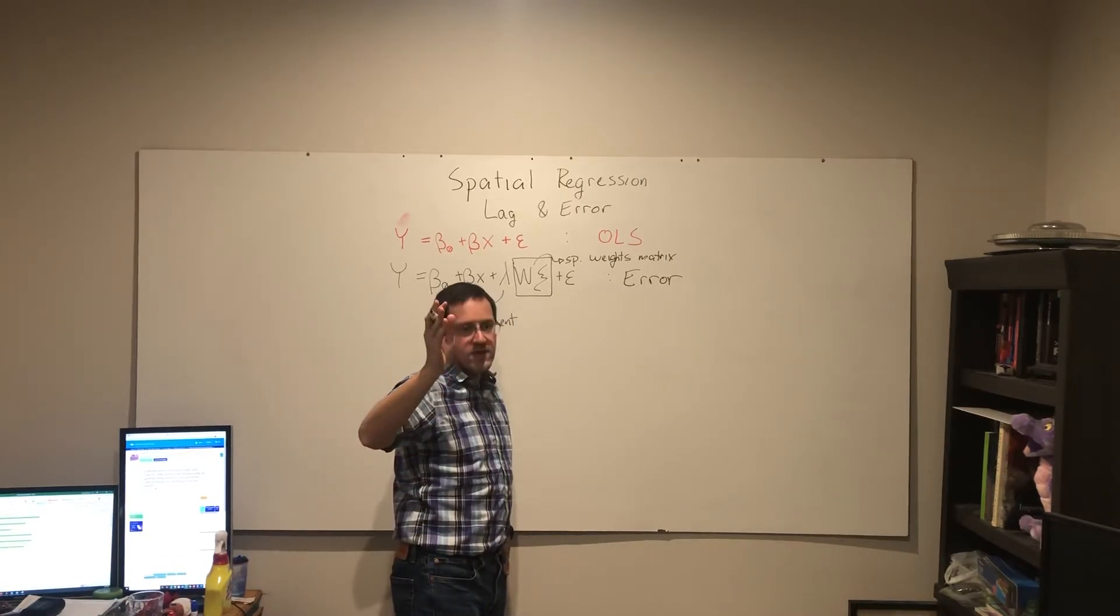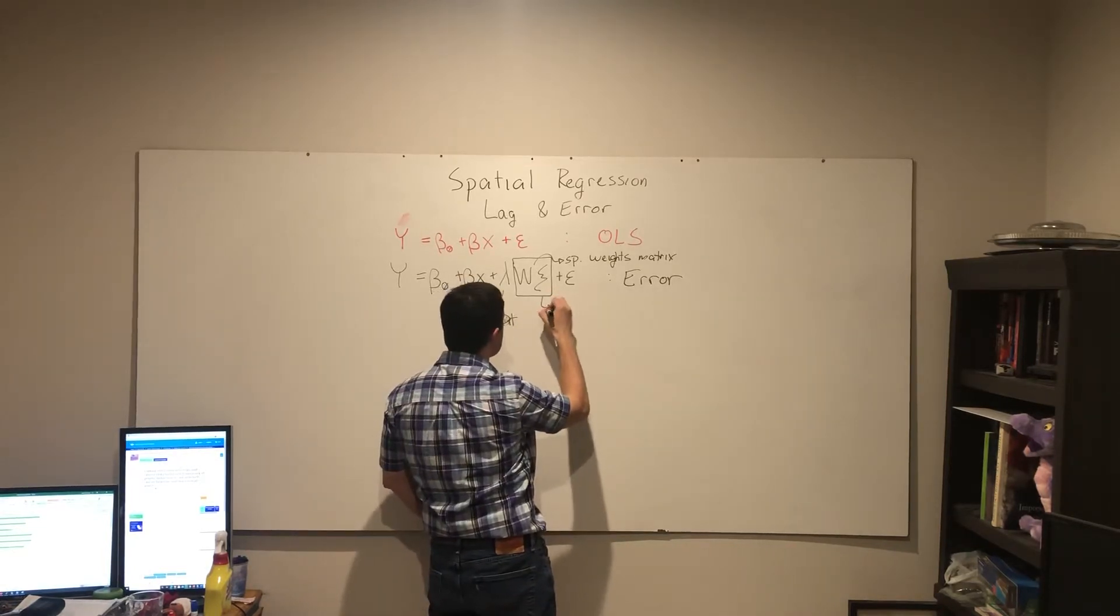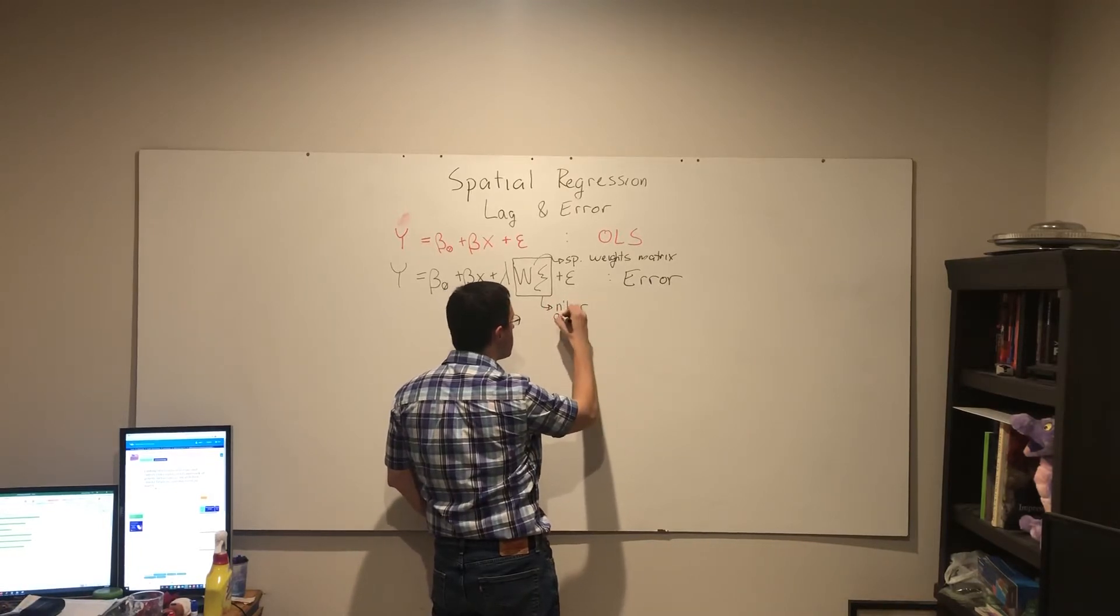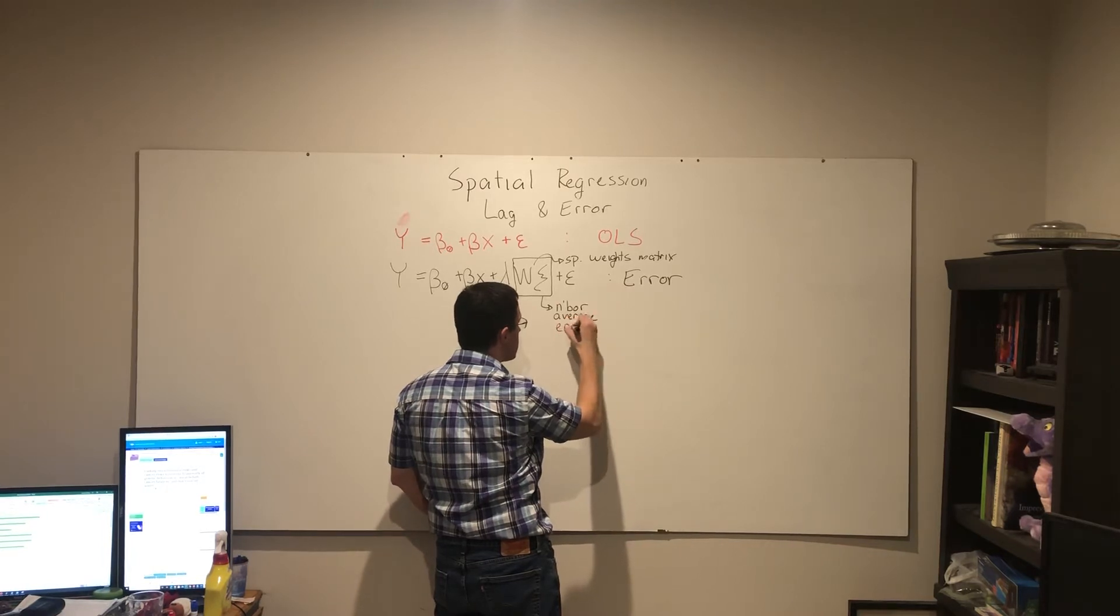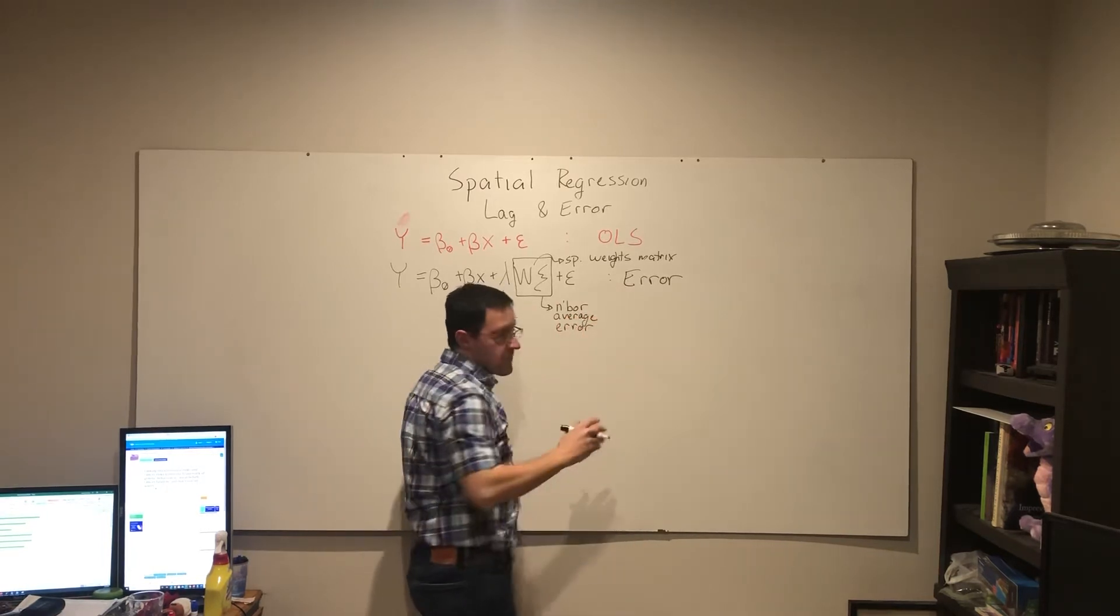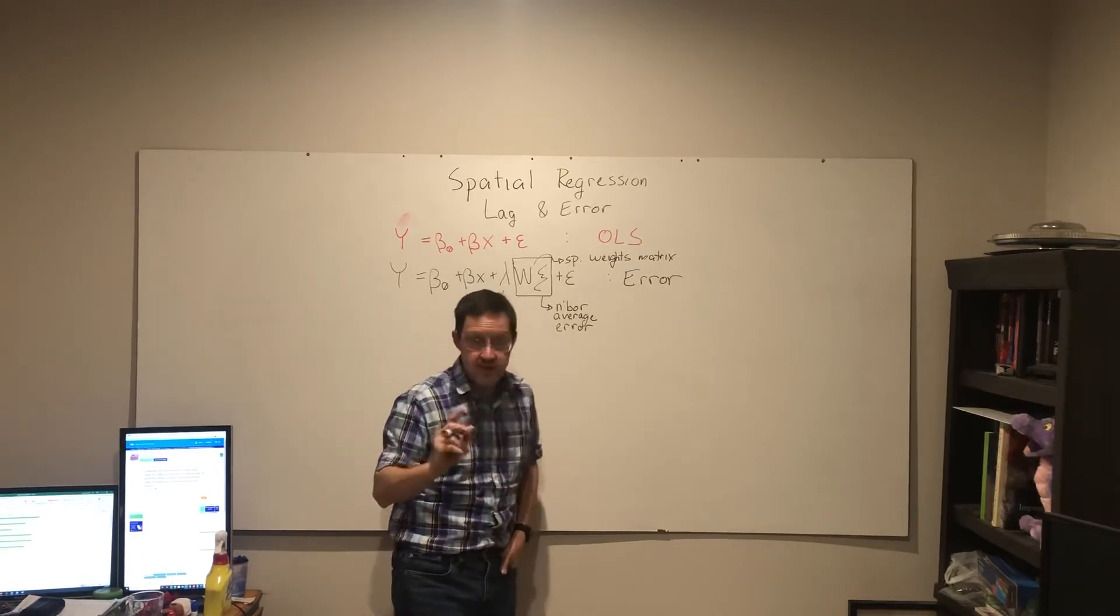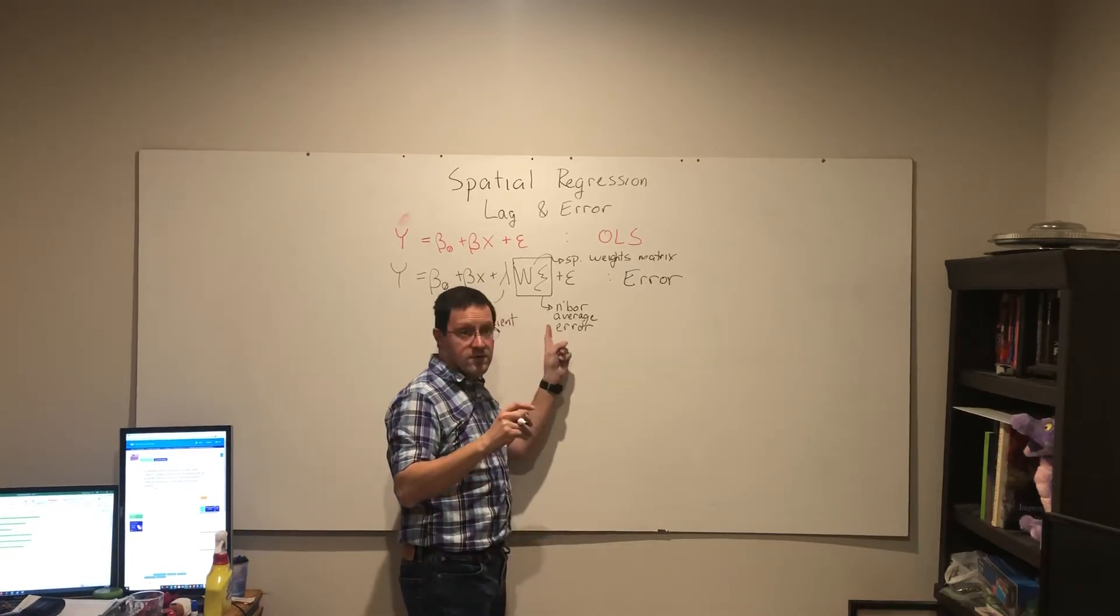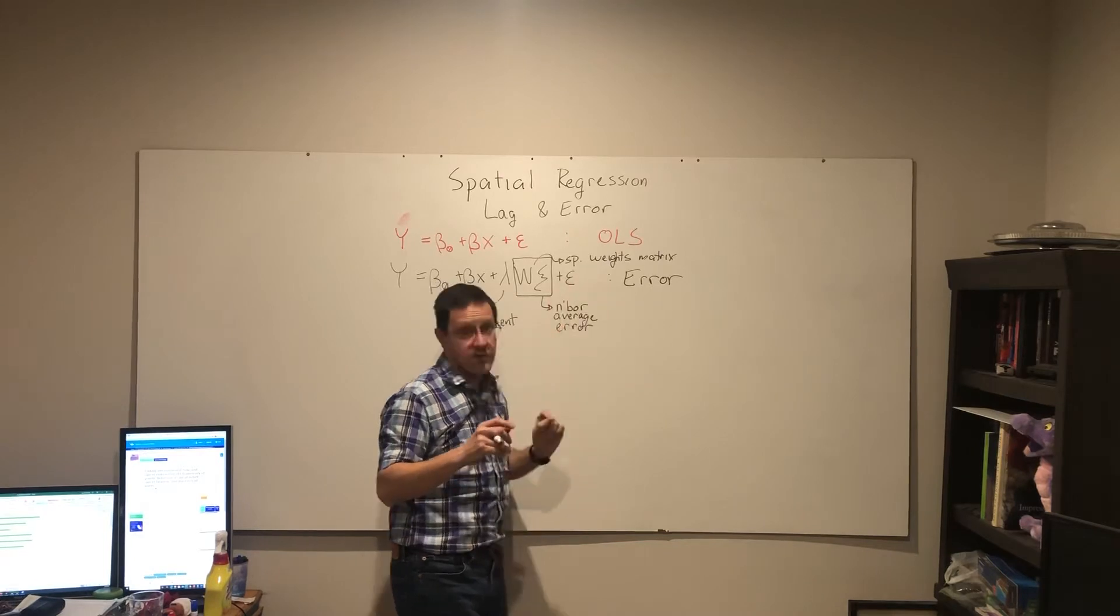That's kind of a lot. Putting those together though, we get something that can be interpreted a bit more readily. And it is the average error of the neighbors as defined by the spatial weights matrix.